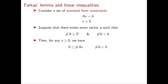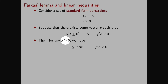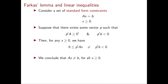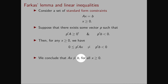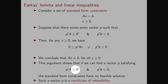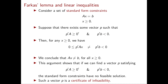Consider the quantity p-transpose Ax. We know that p-transpose A is greater than or equal to 0, so if we assume that x is greater than or equal to 0, this product is greater than or equal to 0. On the other hand, we're assuming that p-transpose b is strictly negative. So we can conclude that p-transpose Ax for any x greater than or equal to 0 is different from p-transpose b. This directly implies that Ax is different from b for all x greater than or equal to 0. In fact, if we multiply both sides of Ax equal to b by p-transpose, we obtain on the left p-transpose Ax and on the right p-transpose b. So this argument shows that if we can find a vector p satisfying p-transpose A greater than or equal to 0-transpose and p-transpose b strictly negative, then the standard form constraints have no feasible solution. So this vector p is a certificate of infeasibility.